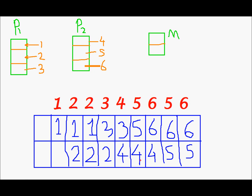Those instances where I didn't have to replace a page in the memory are called hits. For example, placing page 2 the second time was a hit because no changes were needed. Those instances where I had to remove one of the pages to place another are called faults. So placing page 3 was a fault, placing page 4 was a fault, placing page 5 was a fault, placing page 6 was a fault, and placing page 5 again was a fault. The final step of placing page 6 was a hit because 6 was already in memory.